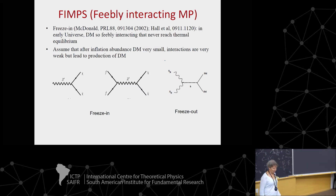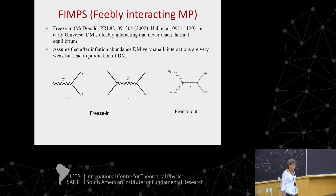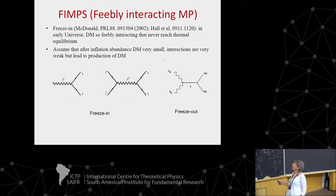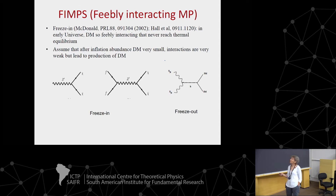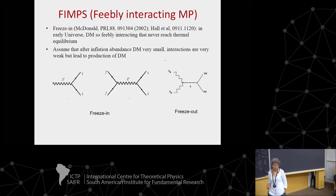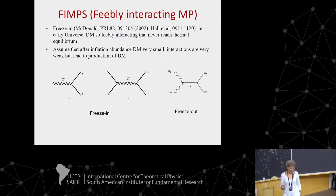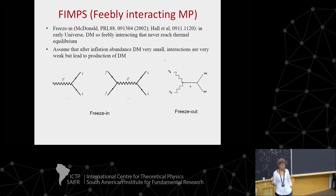We had a generic introduction to freeze-in in the previous talk. I would like to mention that one of the first examples of dark matter through freeze-in was by John MacDonald in 2002, and then there was a lot of activity following the paper of Hall and company.